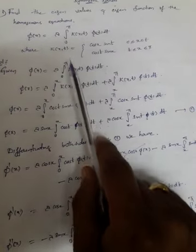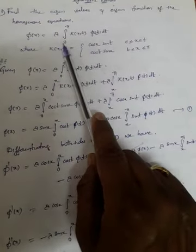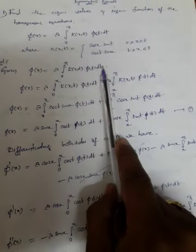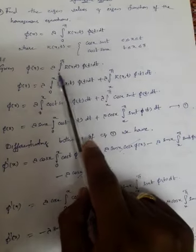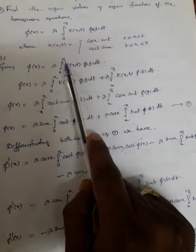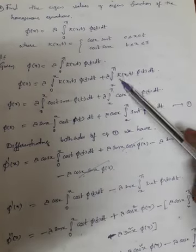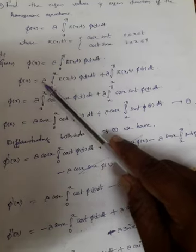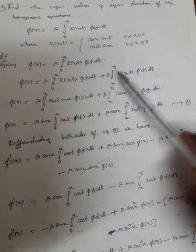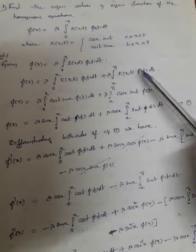What is given: phi(x) is equal to lambda times the integral from 0 to pi of k(x,t) phi(t) dt. Now we will divide the integral from 0 to pi into two integrals — one from 0 to x and the other from x to pi. So phi(x) equals lambda times the integral of k(x,t) phi(t) dt over each sub-interval.